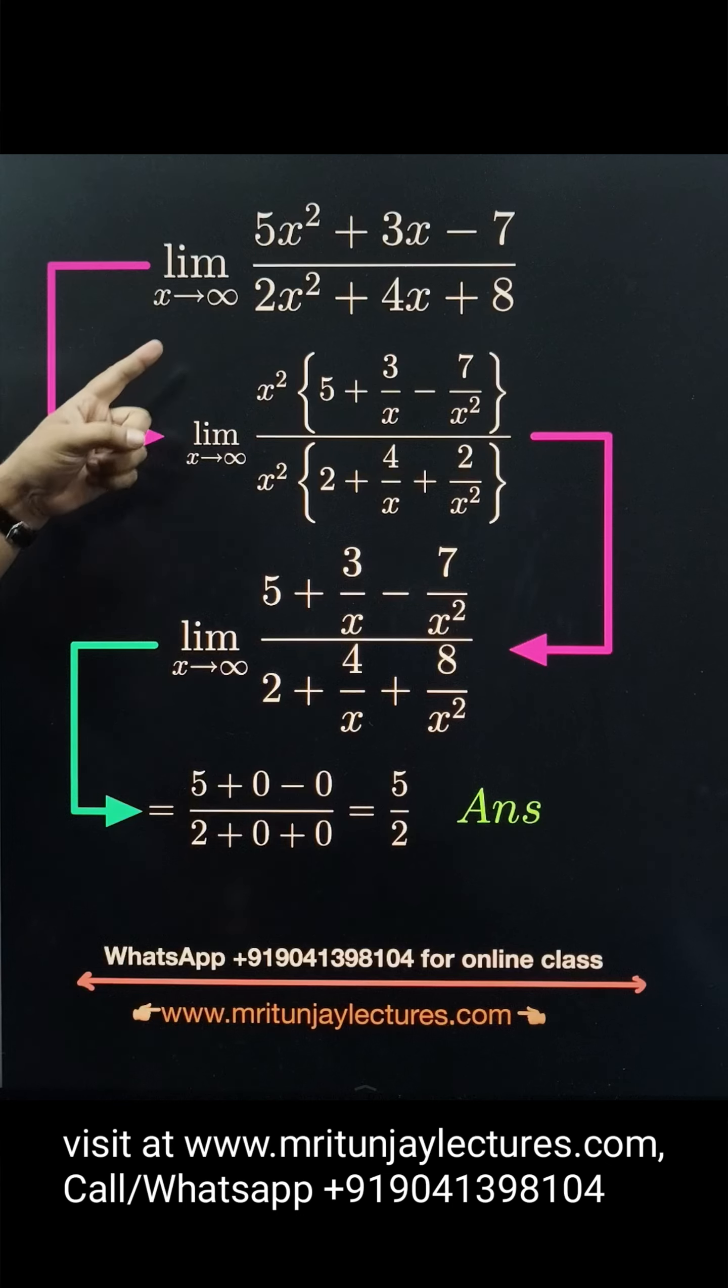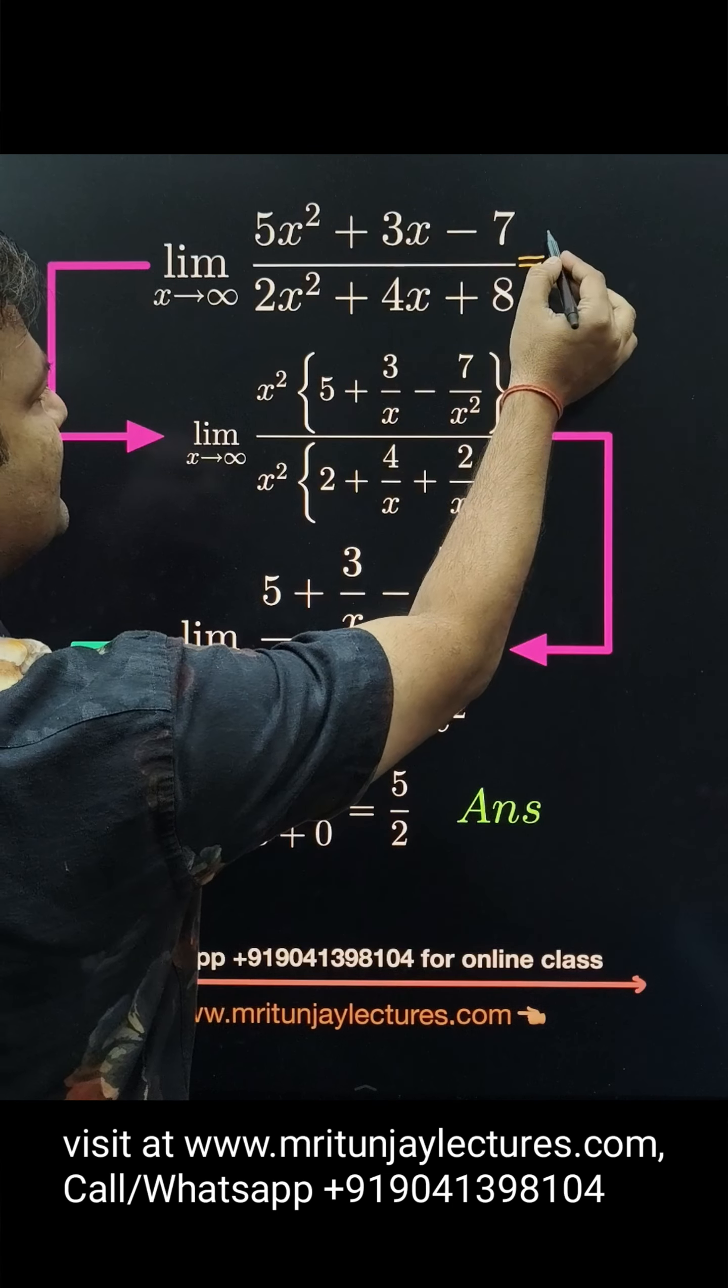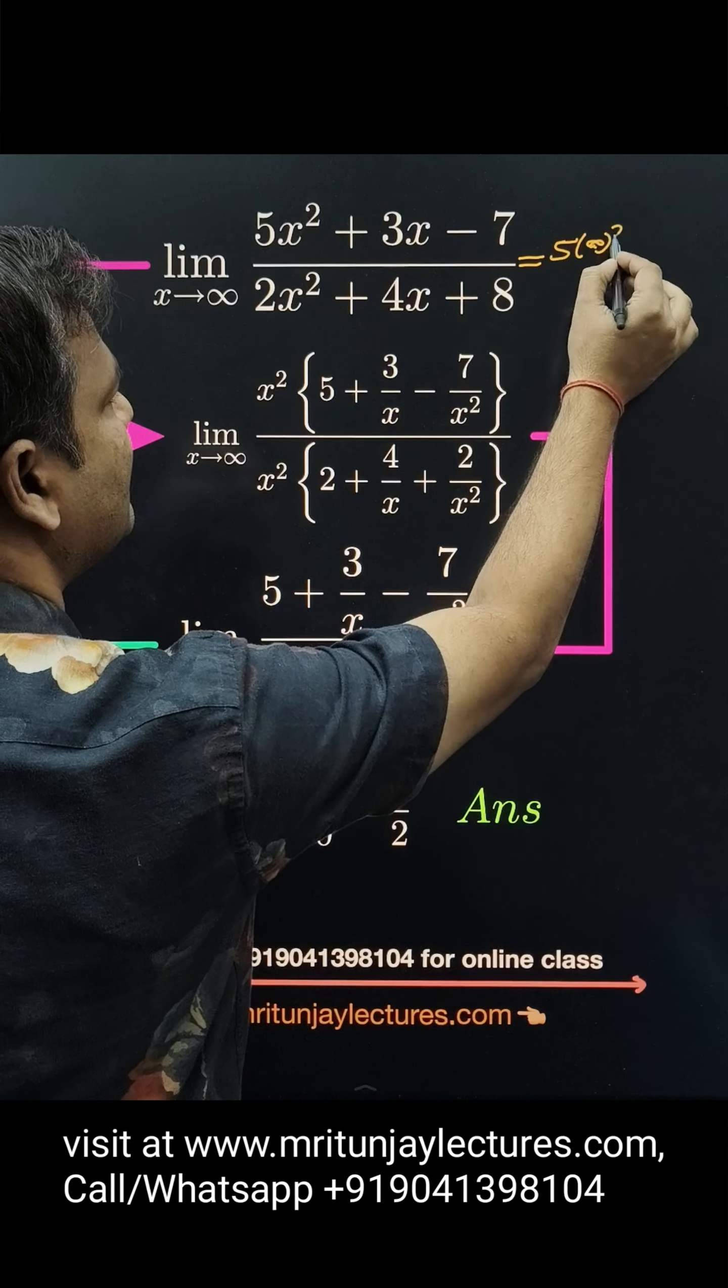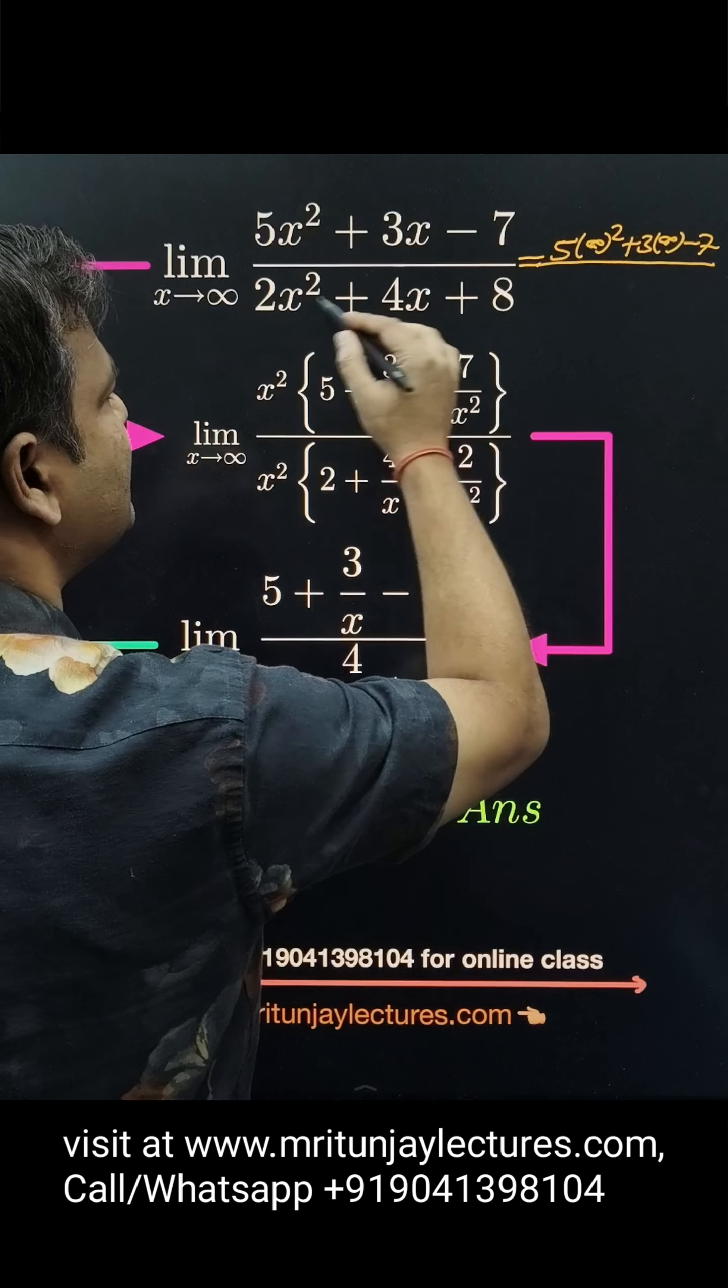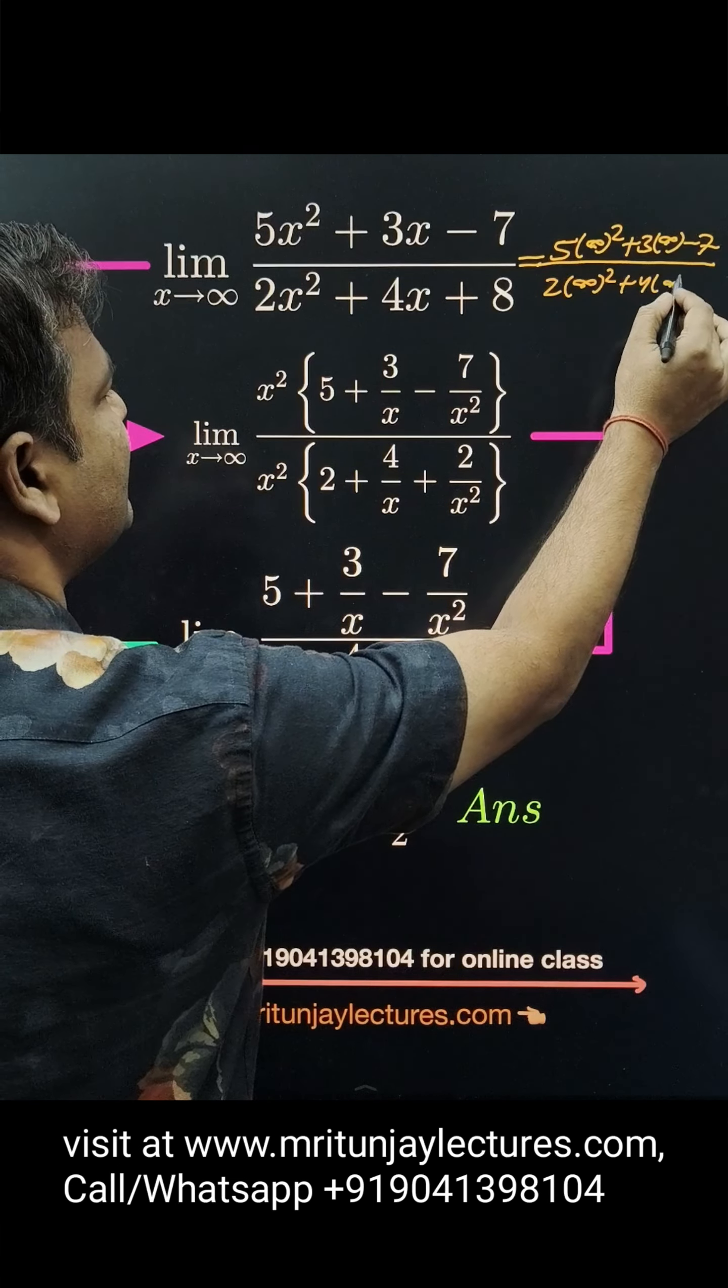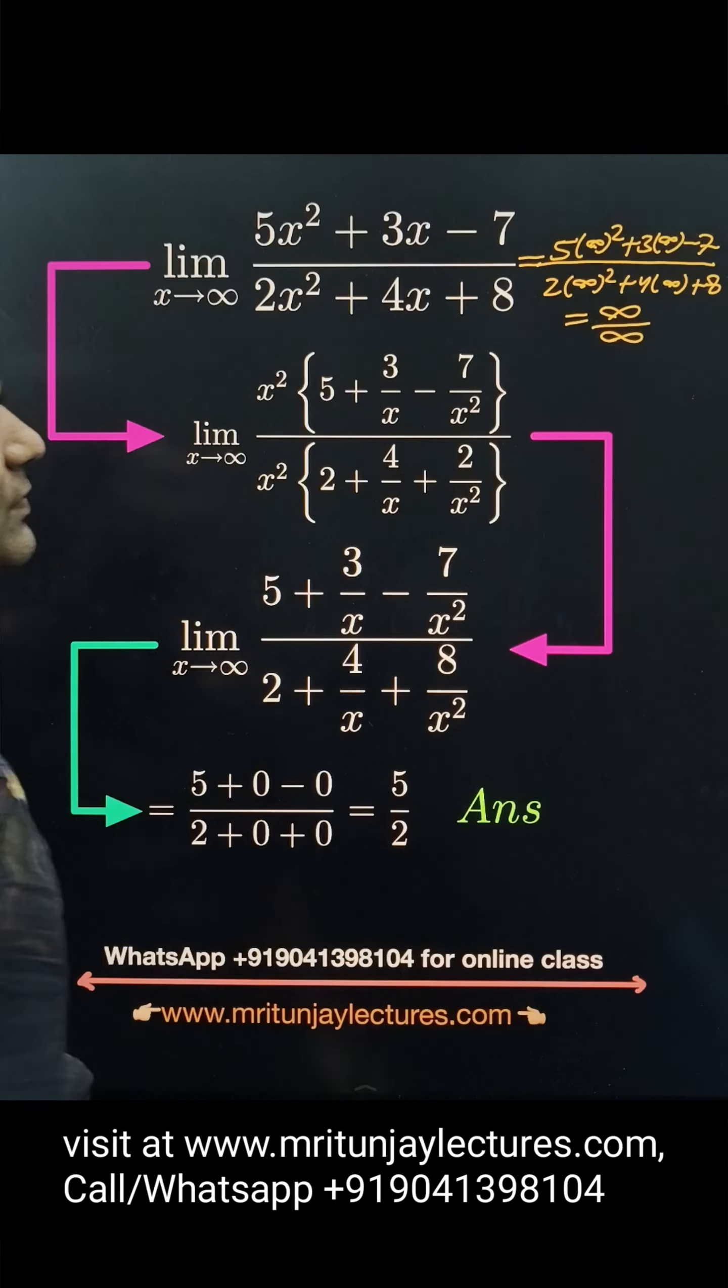First, put x equal to infinity. If you put infinity, then we get 5 times infinity squared, plus 3 times infinity minus 7, divided by 2 times infinity squared plus 4 times infinity plus 8. This gives us infinity over infinity form.